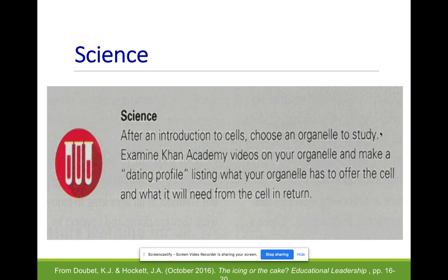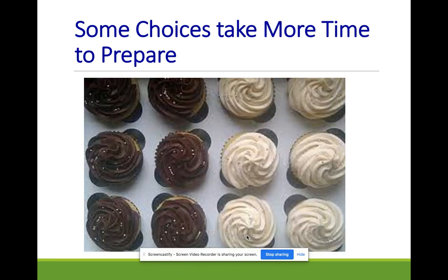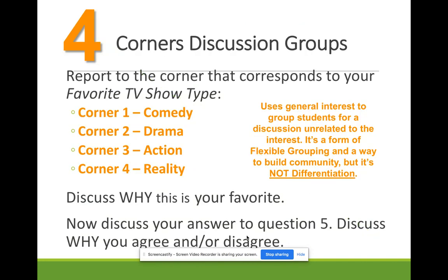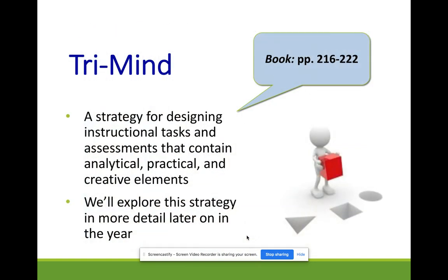Here's a low-prep example: introducing cells — choose an organelle to study, examine comic cat videos on your organelle, and make a dating profile of what your organelle has to offer the cell and what it needs in return. A little bit of choice just by choosing the organelle. For social studies, studying the electoral college, students can share their arguments through a lawyer's opening remarks, an analogy — written or visual — or a speech to the public. Just different ways to express what you know.